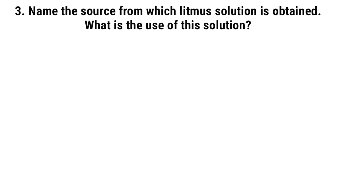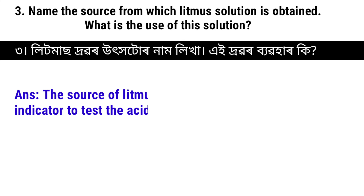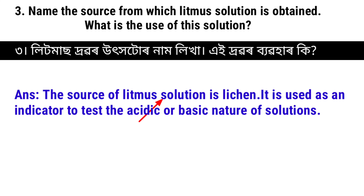Next, question number 3: Name the source from which litmus solution is obtained. What is the use of this solution? The source of litmus solution is lichen. It is used as an indicator to test the acidic or basic nature of solutions.